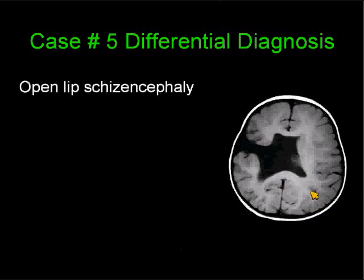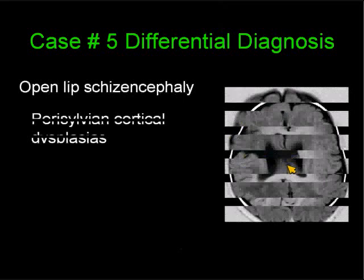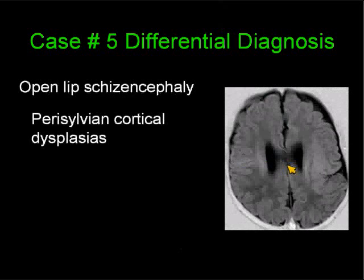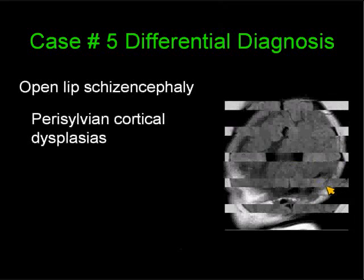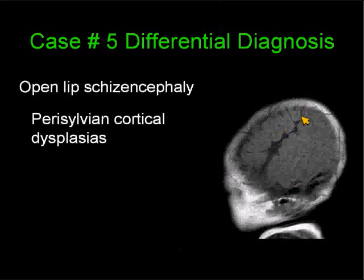Let's look at the differential diagnosis. In open lip schizencephaly, the cleft is actually open and you have CSF between the lips of the schizencephaly. Notice that the cerebral hemisphere tends to be small, the adjacent lateral ventricle is enlarged, and there is absence of the septum pellucidum in the majority of these patients. Perisylvian cortical dysplasia is usually polymicrogyric cortex that travels along the sylvian fissure, may be unilateral or bilateral. It is unilateral in this case. In the parasagittal images, one clue that you're dealing with perisylvian cortical dysplasia is that the sylvian fissure extends way up high superiorly.